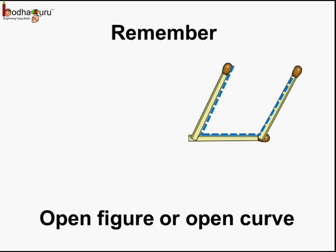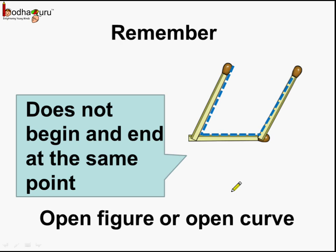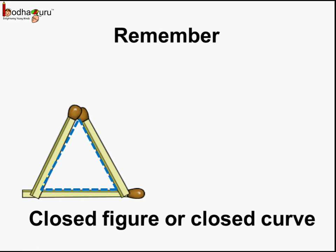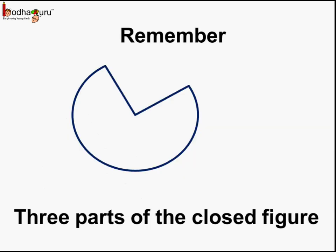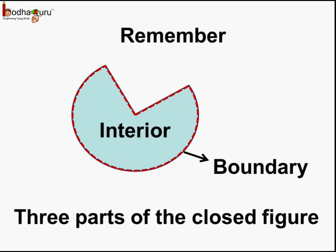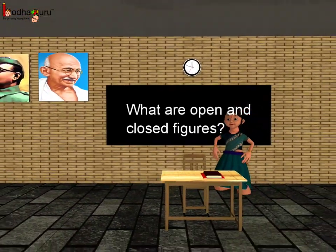So, remember children: what is an open figure or open curve? When the figure does not begin and end at the same point, we call it an open figure or an open curve. Same way, a figure which begins and ends at the same point is called a closed figure or a closed curve. And lastly, remember there are three parts of a closed figure: the outline or boundary, the interior, and the exterior part which lies outside the figure. That was all about closed figures and open figures. Bye-bye children.